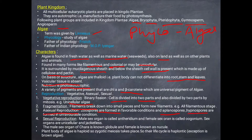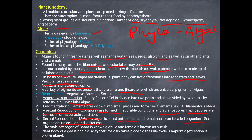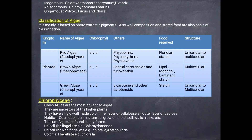Asexual reproduction occurs with the help of zoospores in favourable conditions, and aplanospores and hypnospores in unfavourable conditions. In sexual reproduction, algae have two sex organs: male sex organs called antheridium and female sex organs. These are unicellular and jacketless. The plant body of algae is haploid and the zygotic meiosis is haplontic — the exception is brown algae. Sexual reproduction is of three types: isogamous, anisogamous, and oogamous.